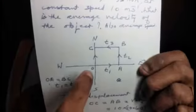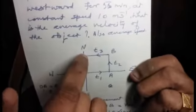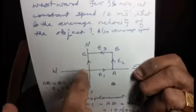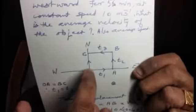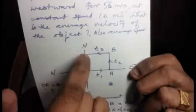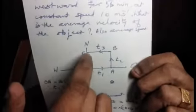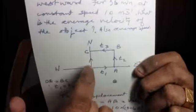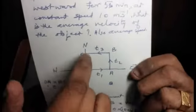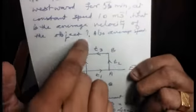Average velocity is the total displacement by total time. Displacement is the vector from initial position O to final position C, that is the shortest path from start to end. Total displacement is OC, directed northward.